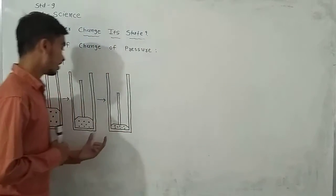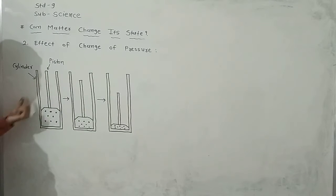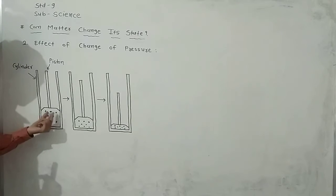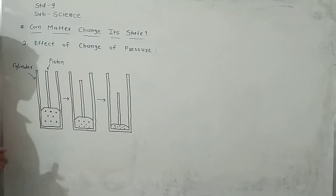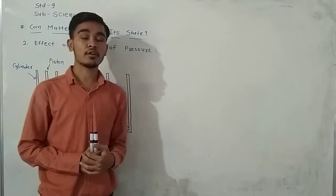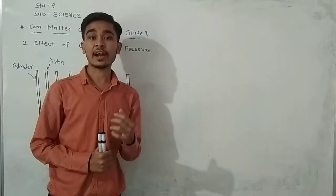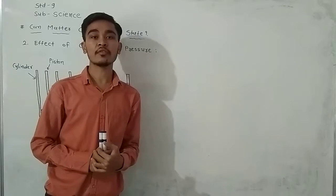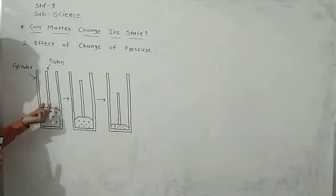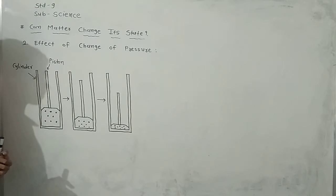In this diagram I draw a cylinder. In this cylinder I take some gases. This diagram shows the arrangement of gas particles inside the cylinder. Gas particles can move randomly and freely — that is a known characteristic of the gaseous state.